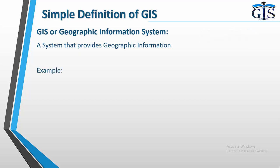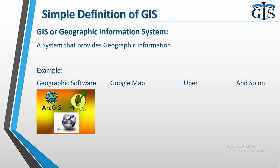Let's see some examples of GIS. GIS is everywhere. Any kind of geographic software being used for map creation with database and analysis — all of those software are examples of GIS, such as ArcGIS, QGIS, SuperMap and many more.